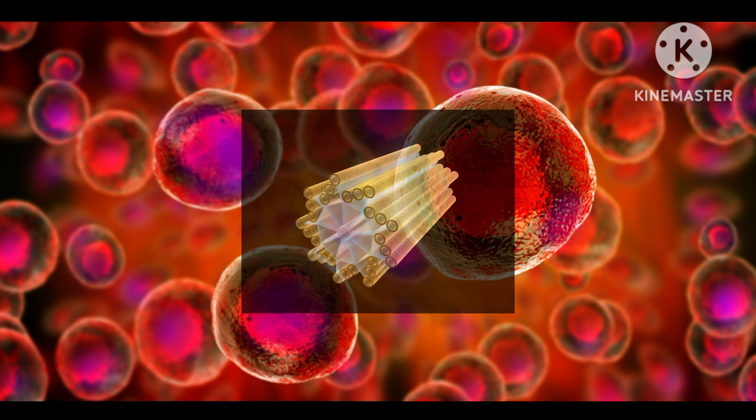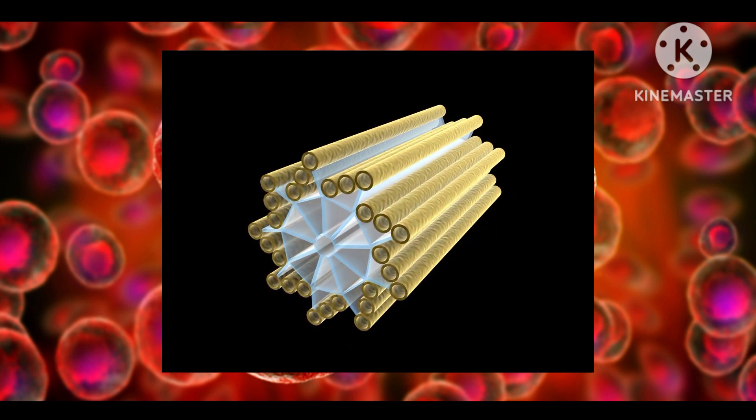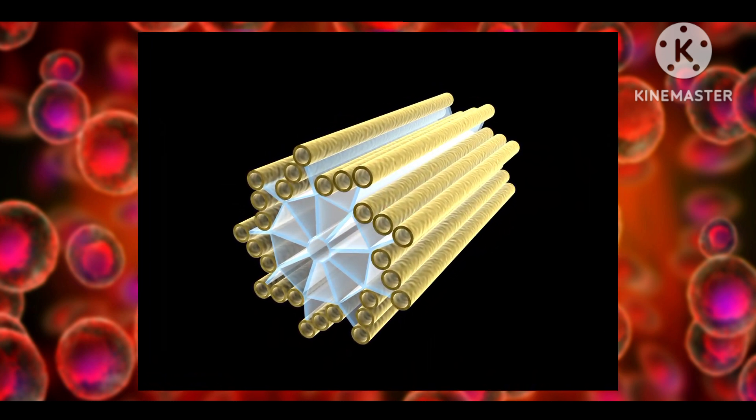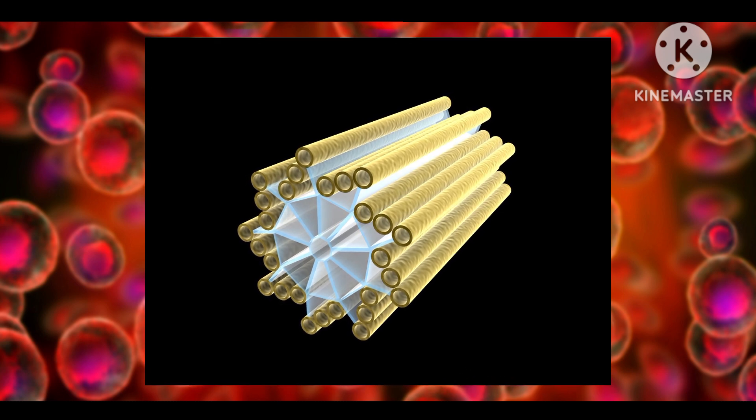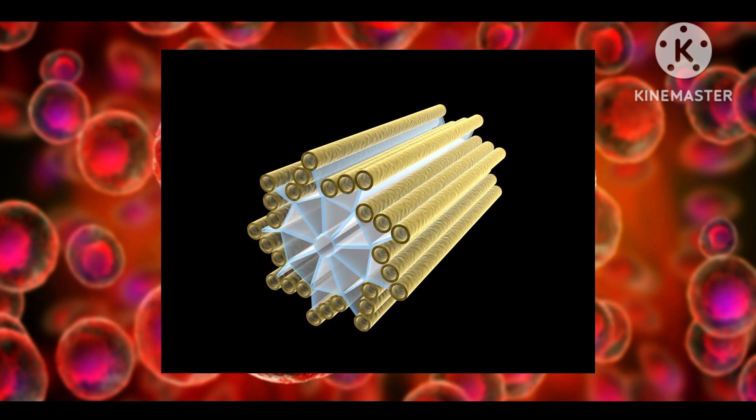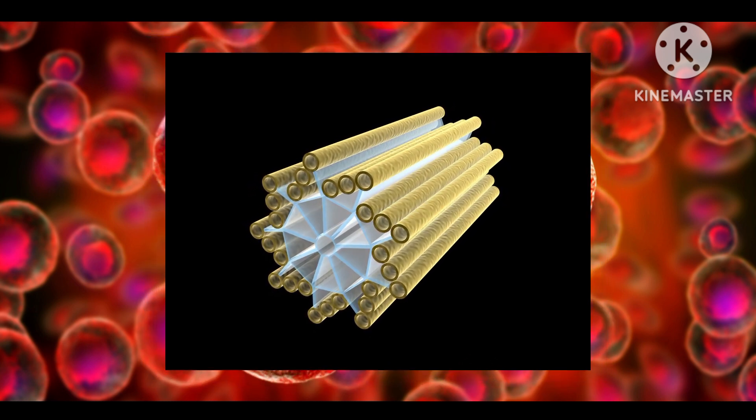The centrosome is made up of two perpendicular centrioles - a daughter centriole and a mother centriole - linked together by interconnecting fibers. It consists of a complex of proteins that helps in the formation of additional microtubules.